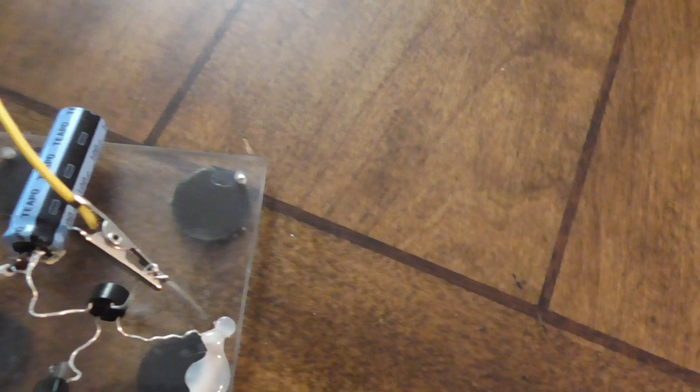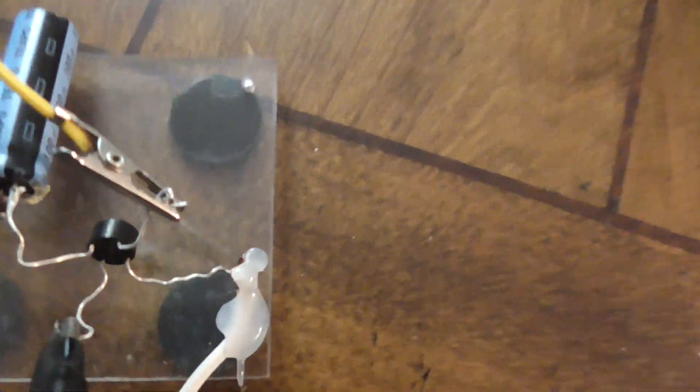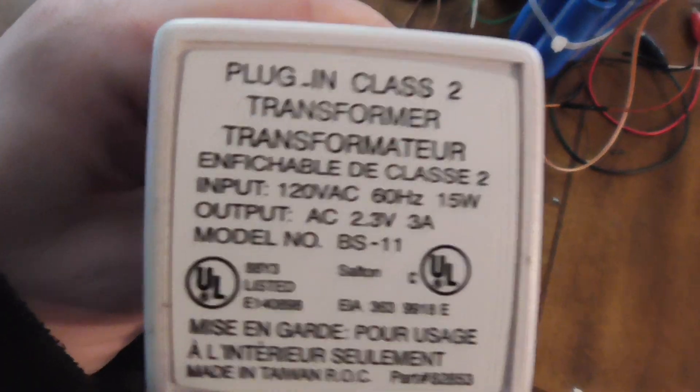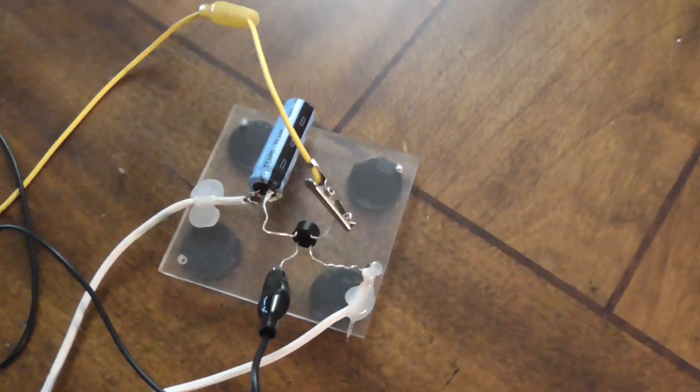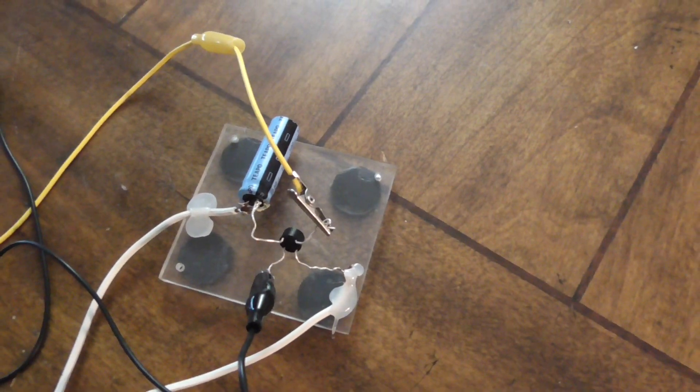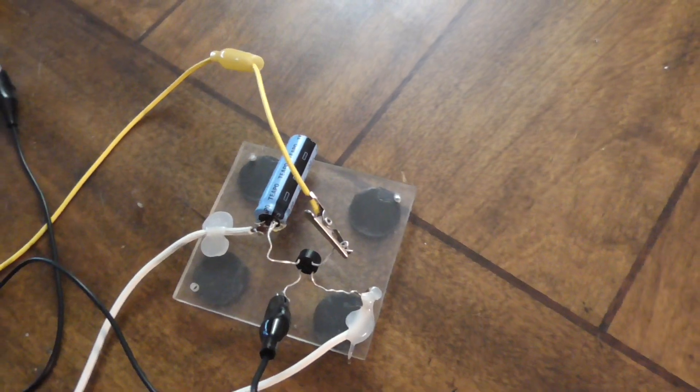And what happens is the capacitor drops the current with the reactance value. I have a 100 UF capacitor right here. So with the math at AC, 2.3 volts, that comes up to about 17 milliamps. This is very, very low.